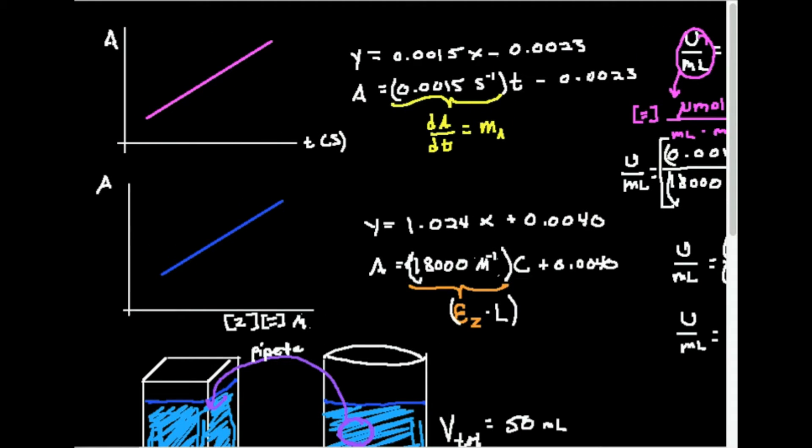Alright, so here's what I have. Ultimately here I have my activity assay, A versus T. I have a graph that comes out of it like this. I have my A versus concentration of Z. I'm using the same reaction as before. I'm using A gets converted to Z by enzyme 1.